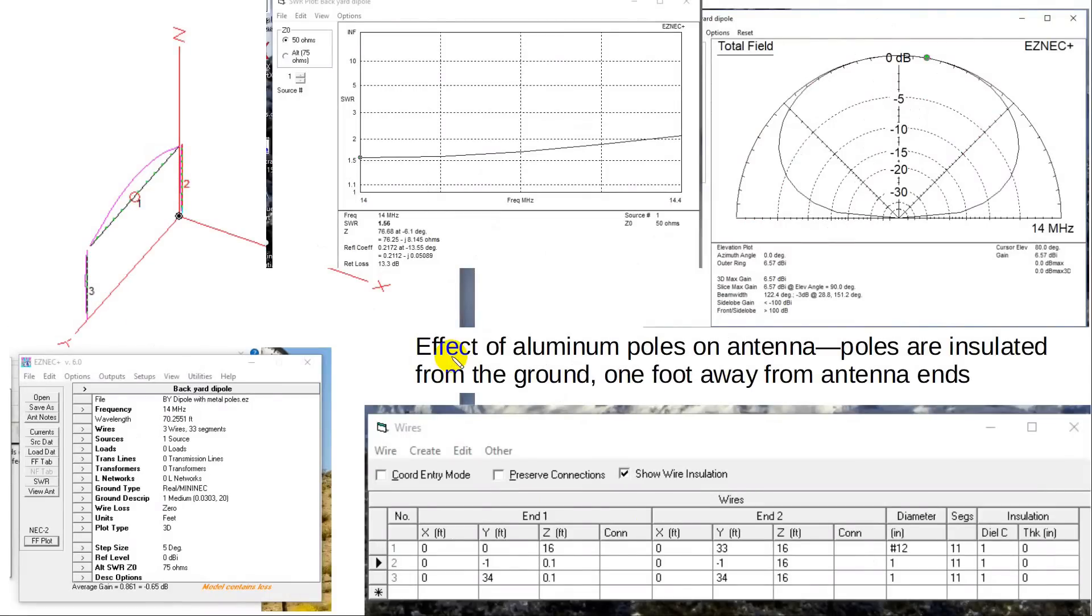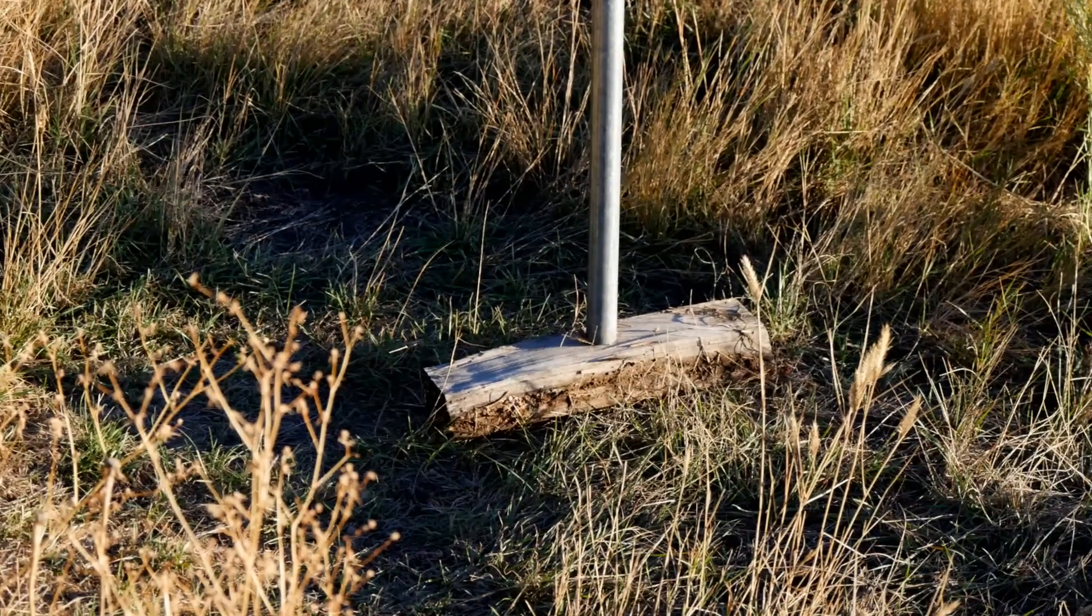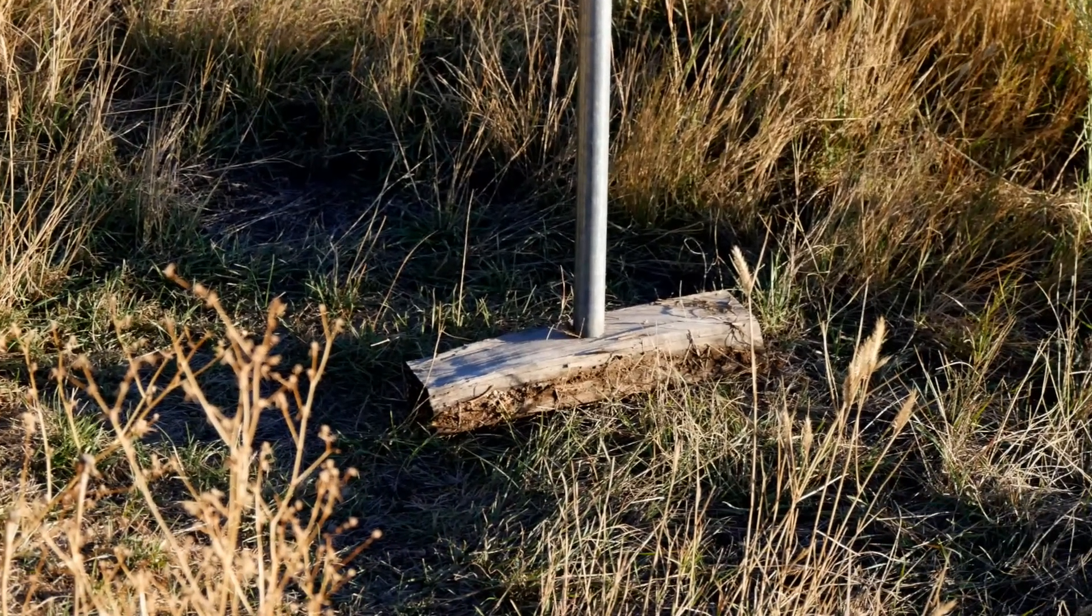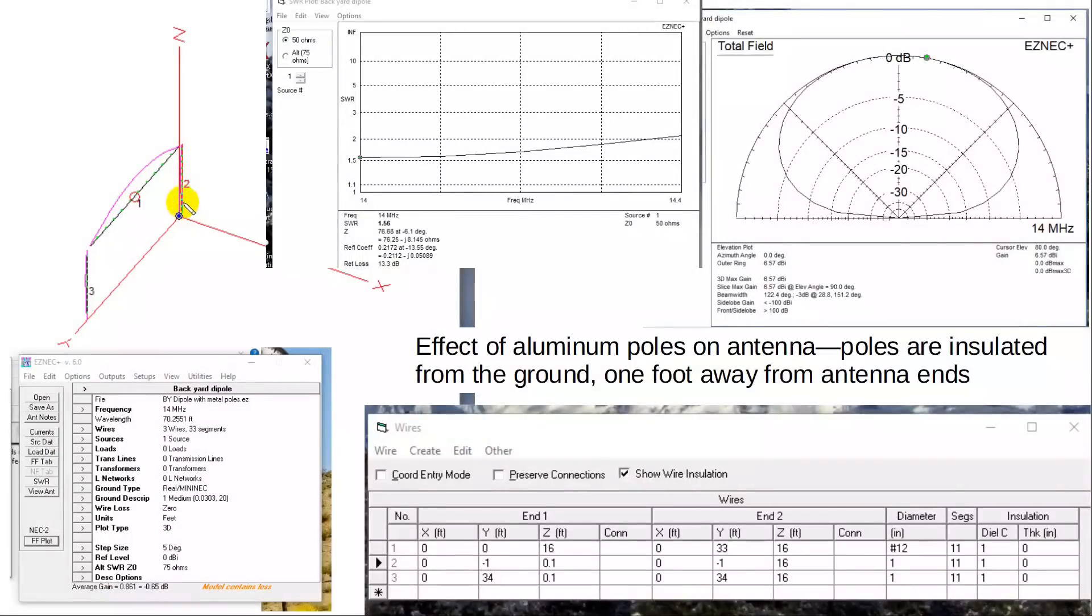Now I'm kind of curious here. I use aluminum masts and so I modeled them here first with no connection to ground. These things are floating. Well, how would I do that? Well, I'll tell you. If I just put a piece of wood underneath the antenna, as long as it's dry, it's going to insulate that pole from ground. And let's see what happens. It's 20 feet tall there, 20 feet tall there. Well, let's see. What have we done here?